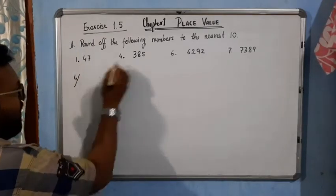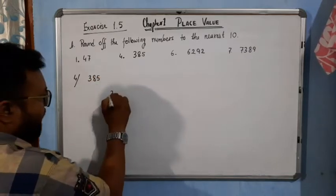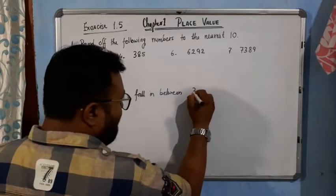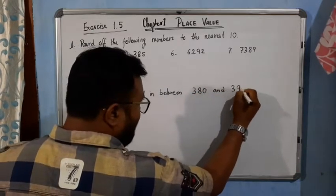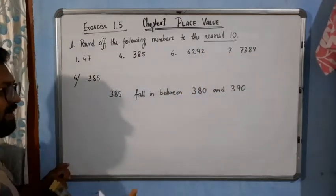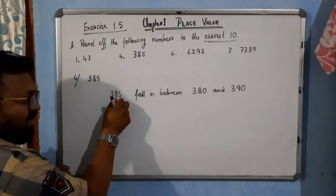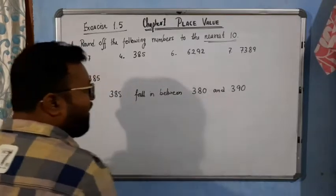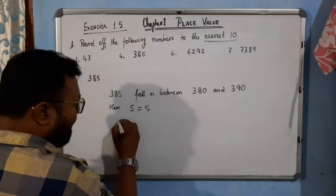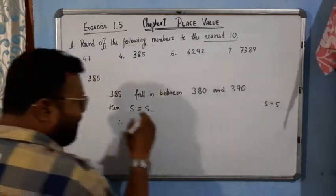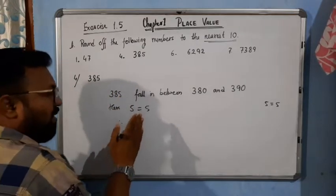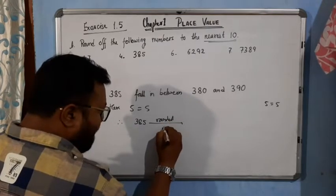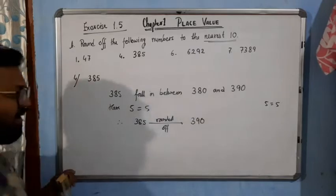The fourth number is 385. Here, 385 falls in between 380 and 390 when we talk about the nearest ten. We will look at only these two digits. 85 is in between 80 and 90, but we simply write 300 for the hundreds. Here, 5 is equal to 5. As I told you, when the digit equals 5, the number is nearer to the higher ten. So 385 is rounded off to 390.